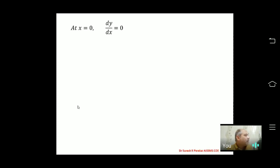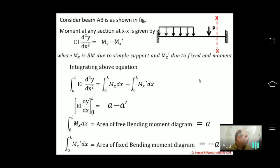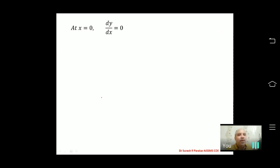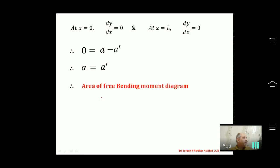Therefore, the first equation for a fixed beam is: area of the free bending moment diagram equals area of the fixed bending moment diagram, i.e., A = A'. This is our first governing equation.